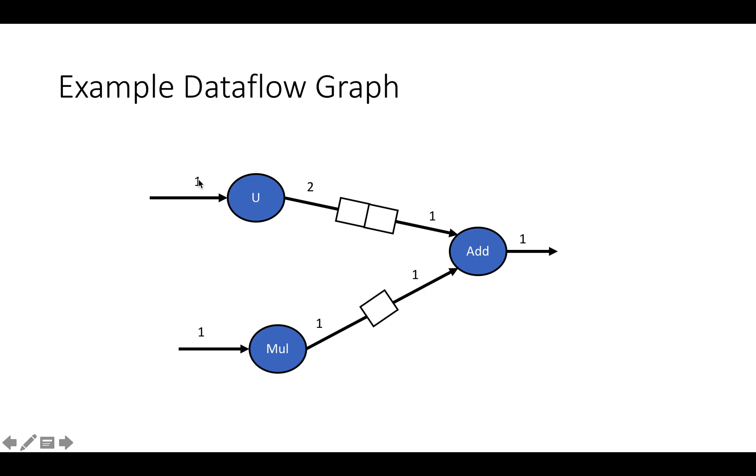For example, an upsample takes in one piece of data and produces two pieces of data because it just emits it twice. An adder takes in one piece of data from each of its input edges and produces one piece of data on its output edge. A multiplier, suppose multiplied by a constant, takes in one piece of data from one edge and outputs one piece of data. These boxes indicate the capacities of the FIFOs sitting on the channels.